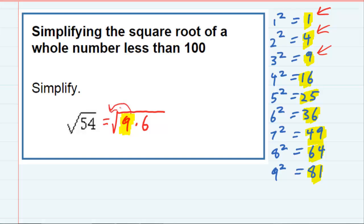Now the way that I pull something out from underneath the radical is to take its square root. And since we're using this one, the square root of 9 is 3.